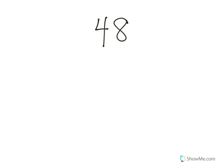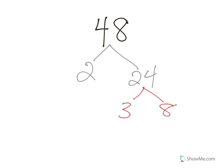What multiplies together to get 48? Well, 1 times 48, but that's not really helpful. Let's do 2 times 24. 2 doesn't break down anymore. 24 breaks down 3 and 8, and 8 breaks down 2 and 4, right? And then 4 breaks down 2 and 2.